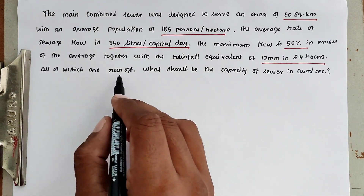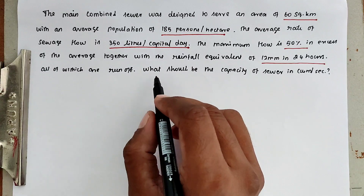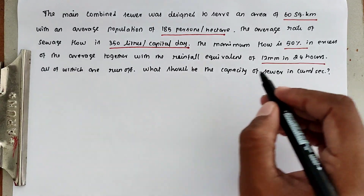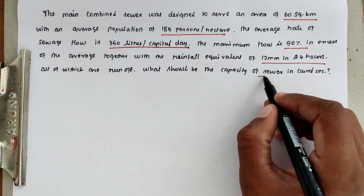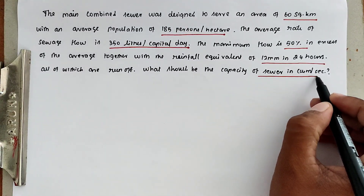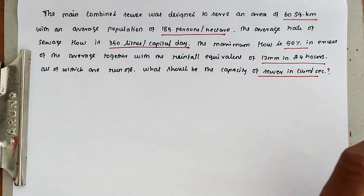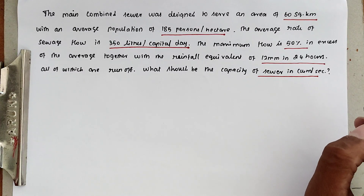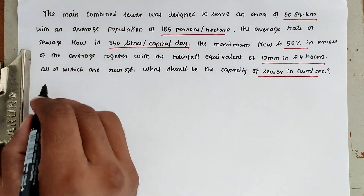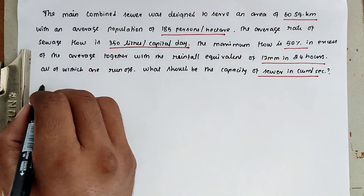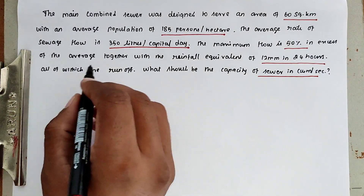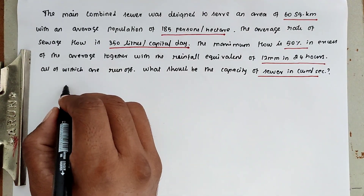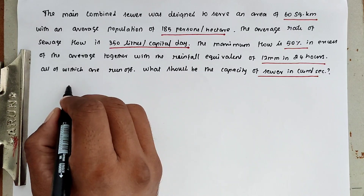All of which are runoff — what should be the capacity of the sewer? We have to design the sewer and find out the capacity. First, we have to find out the total population in the particular area.